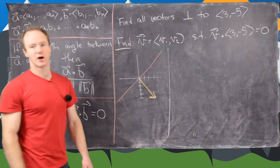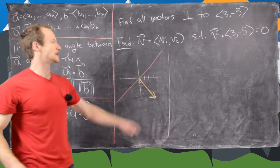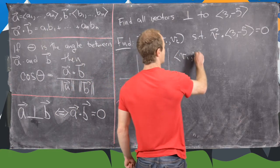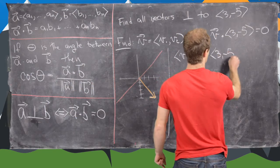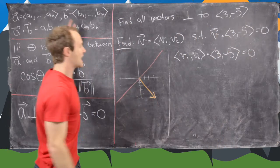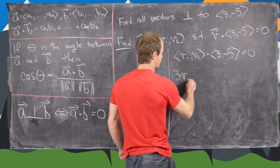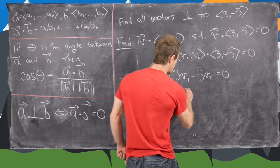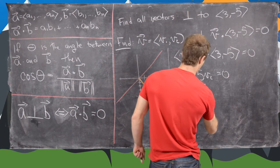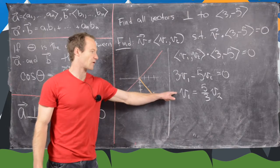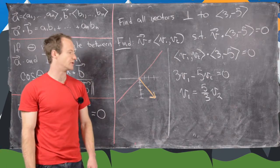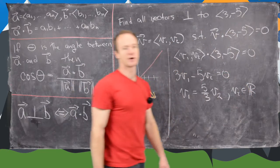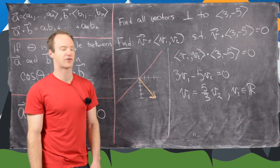So now let's work it out algebraically. We want to take v dot 3, -5, but we defined v component-wise by v1, v2. So we have v1, v2 dot 3, -5 equals 0. But then by the definition of the dot product, that gives us 3v1 minus 5v2 equals 0. In other words, v1 equals 5 thirds v2. So we've got a relationship between v1 and v2. But now notice v2 can be anything.